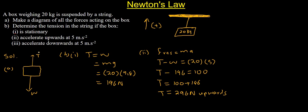The last question states the following: determine the tension in the string if the box accelerates downwards at 5 meters per second squared. So when it accelerates downwards we write Roman figure 3.